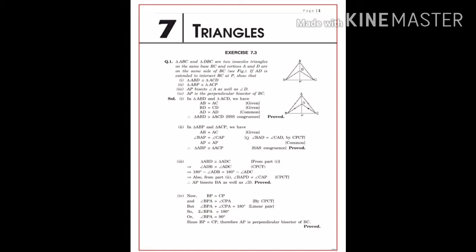Now, second: In Triangle ABP and Triangle ACP, AB equals AC, again given since opposite sides of an isosceles triangle are equal. Angle BAP equals Angle CAP, as Angle BAD equals Angle CAD by CPCT from the previous triangle, so we can use this property here. And AP equals AP, common in both triangles. Again, these triangles are congruent by the SAS property.